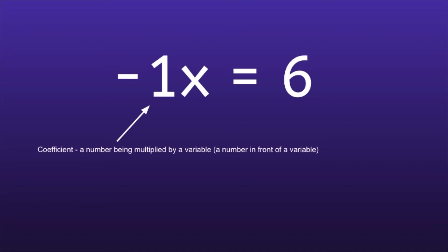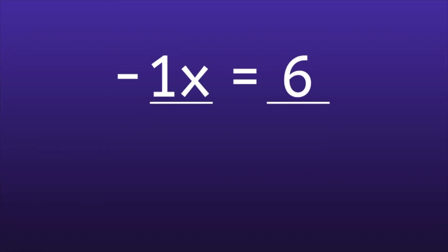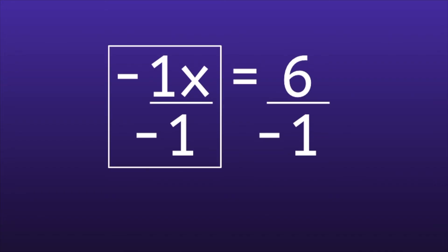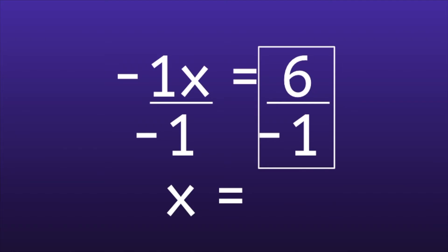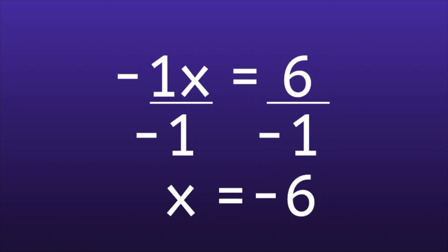So just like when solving other one-step equations, we want to do the inverse, or opposite, operation. What is the opposite of multiplying by a negative 1? Dividing by a negative 1. We're going to do that on both sides. On the left side, negative 1x divided by negative 1 — negative 1 divided by negative 1 equals 1, since any number divided by itself always gives us 1. So that simplifies to just x. On the right side, 6 divided by negative 1 is equal to negative 6. So our simplified solution is x is equal to negative 6.